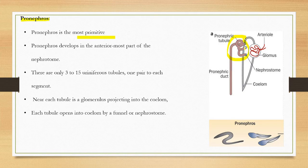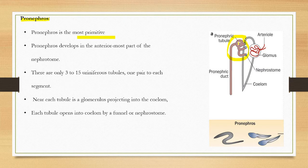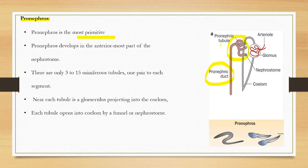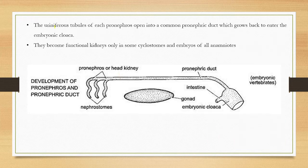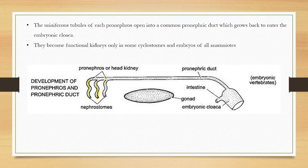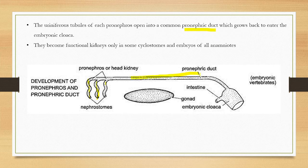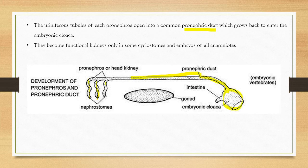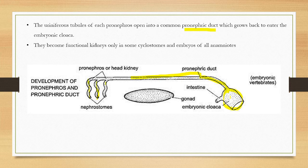All the pronephric tubules open into a common pronephric duct, which grows back to enter the embryonic cloaca. These are present in some cyclostomes and embryos of all anamniotes.